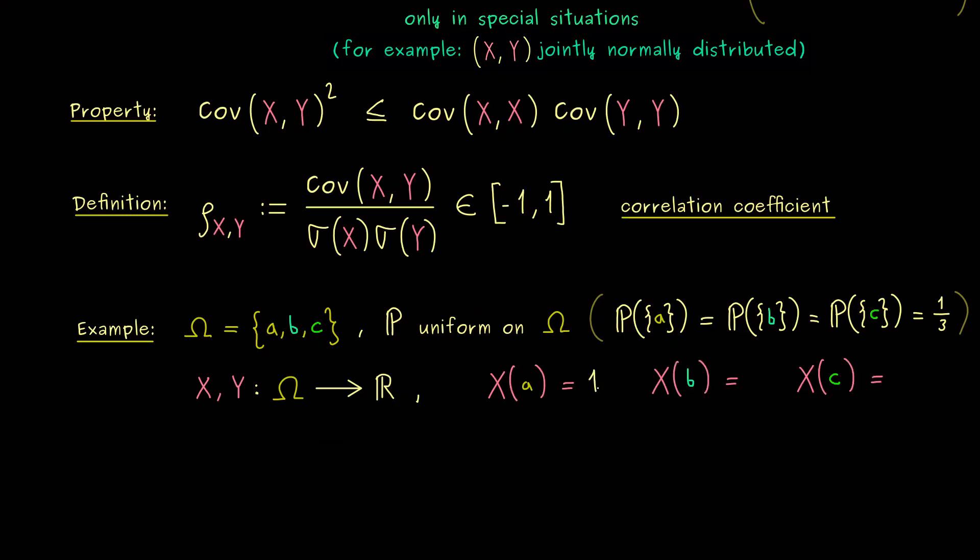Now, X should send the first one to 1, the second one to 0 and the last one to minus 1. So not so complicated and now let's do the same for Y. Now, most importantly, I want that Y is equal to 0 whenever X is not equal to 0. Hence, only for B we can have a non-vanishing value.